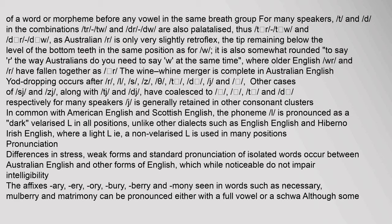Yod dropping occurs after 'r', 'l', 's', 'z', 'th', 't', 'd', 'j', and other cases. Cases of 's+j' and 'z+j', along with 't+j' and 'd+j', have coalesced to 'ch' and 'dj' respectively for many speakers. 'J' is generally retained in other consonant clusters. In common with American English and Scottish English, the phoneme 'l' is pronounced as a dark, velarized 'l' in all positions, unlike other dialects such as English English and Hiberno-Irish English, where a light 'l' is used in many positions.